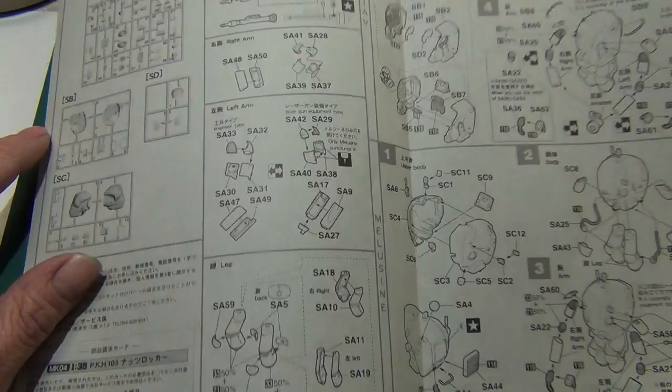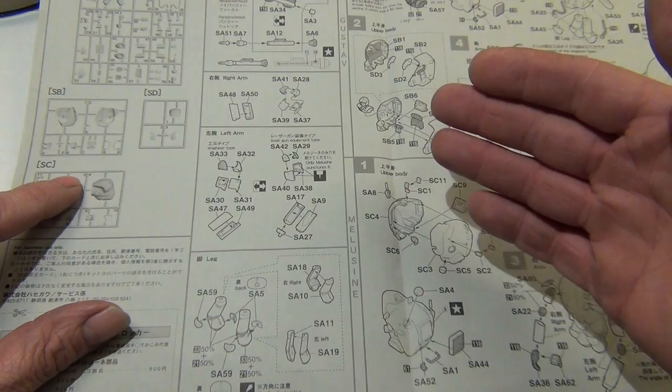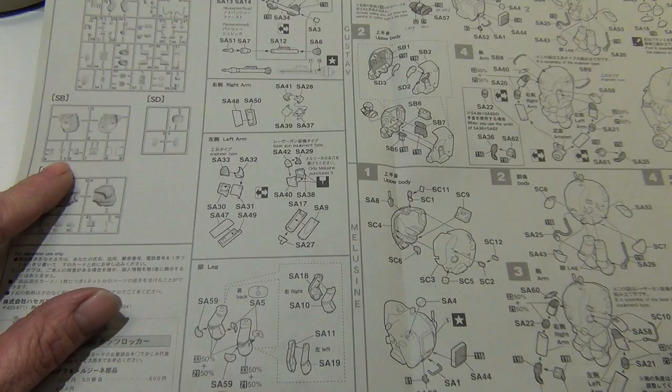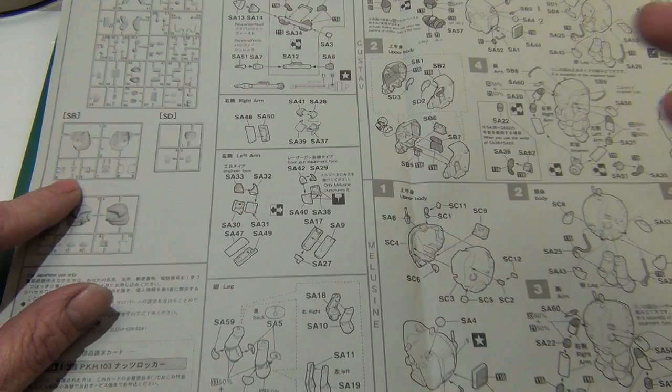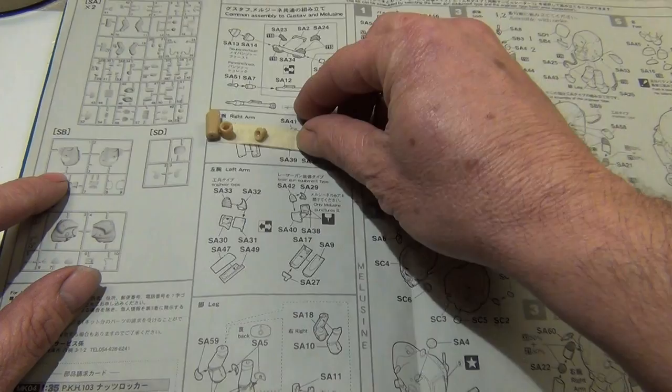Because what I ended up doing really was because some of these parts are so similar between the left arm, the right arm, this figure, that figure, this weapon, that weapon, that I ended up just going ahead. There's so many extra parts on the sprues that I've actually built a couple of lefts, a couple of rights, different built extra kind of things and just mounted the sub assemblies on tape as I went along and marked them, left arm, right arm.